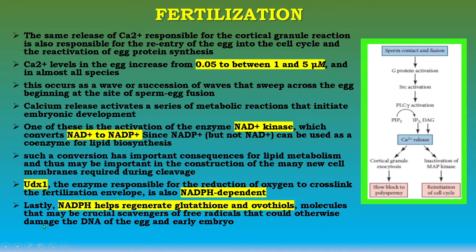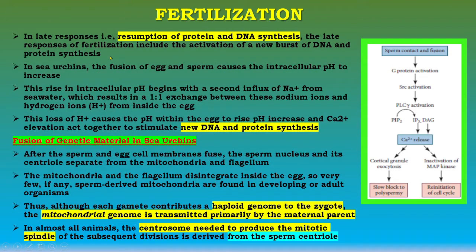In late responses, fertilization activates a new burst of DNA and protein synthesis. In sea urchin, fusion of egg and sperm causes intracellular pH to increase. This rise begins with a second influx of sodium ions from seawater, resulting in a one-to-one exchange between sodium ions and hydrogen ions from inside the egg. This loss of hydrogen ions causes the pH within the egg to rise. pH increase and calcium elevation act together to stimulate new DNA and protein synthesis.